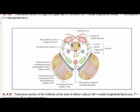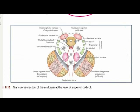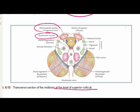The transverse section of the midbrain at the level of the inferior colliculi shows central gray matter containing two nuclei: the nucleus of the cochlear nerve and the mesencephalic nucleus of the trigeminal nerve. At the level of the superior colliculi, the central gray matter in each half contains two nuclei: the oculomotor nerve nucleus and the mesencephalic nucleus of the trigeminal nerve, which occupies the same position as in the lower part of the midbrain.